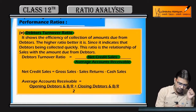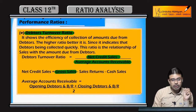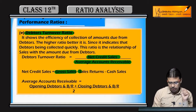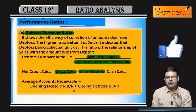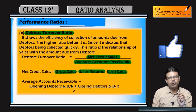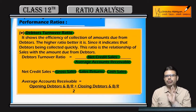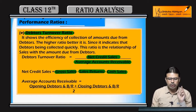Net credit sales — what does this mean? Gross sales, total sales — that is gross sales minus cash sales, which gives us net credit sales.